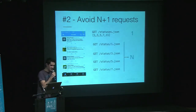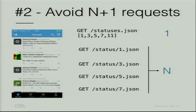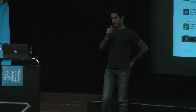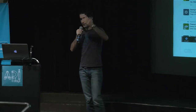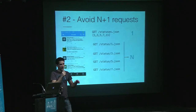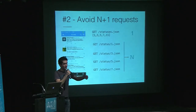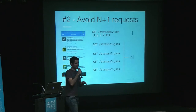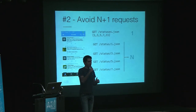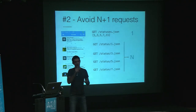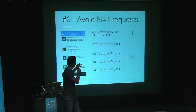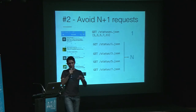Step two is a bit trickier. You must do everything you can to avoid N+1 requests. Here is a simple case: let's imagine you're building a Twitter app. What you want to do at some point is display a timeline of statuses, and you'll have to make an API call to retrieve statuses. You have two options. Option one is the API endpoint gives you everything you need to actually build the UI, so you'll just make one request — that is the good case.